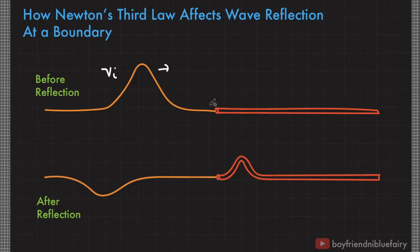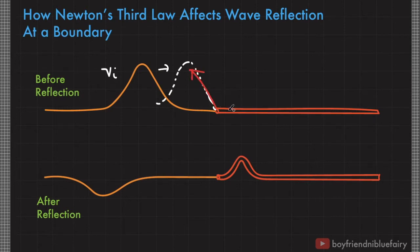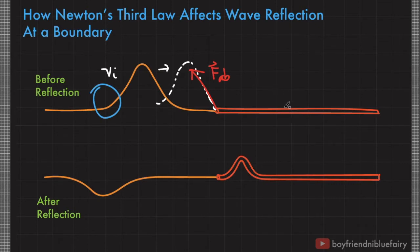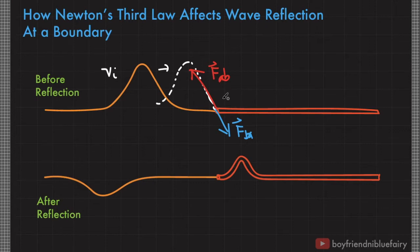Let's call this wave traveling to the right as the incident wave and designate its velocity as V sub I. Once it reaches this point, this part of the wave is actually pulling the part of the string with larger linear mass density in this direction — let's call this force F sub AB. By Newton's third law, I'll call this the lighter string and the heavier string for simplicity. When the lighter string exerts a force F sub AB, the heavier string will exert an equal but opposite force, F sub BA. After exerting these forces, after some time, there will be a transmitted wave.